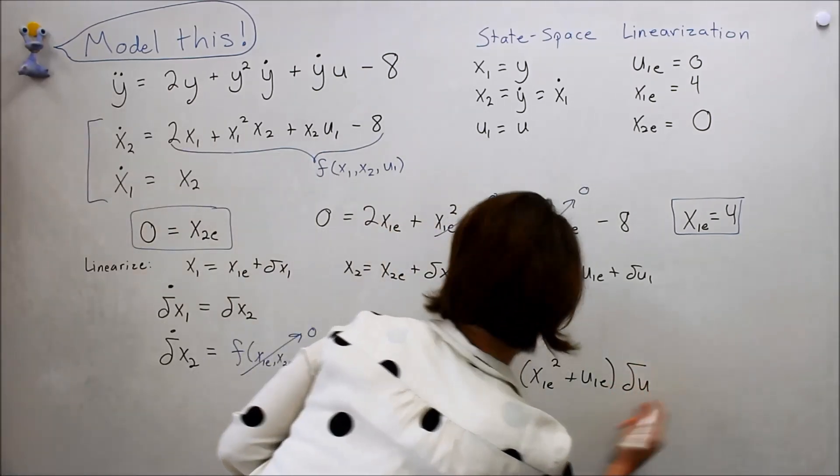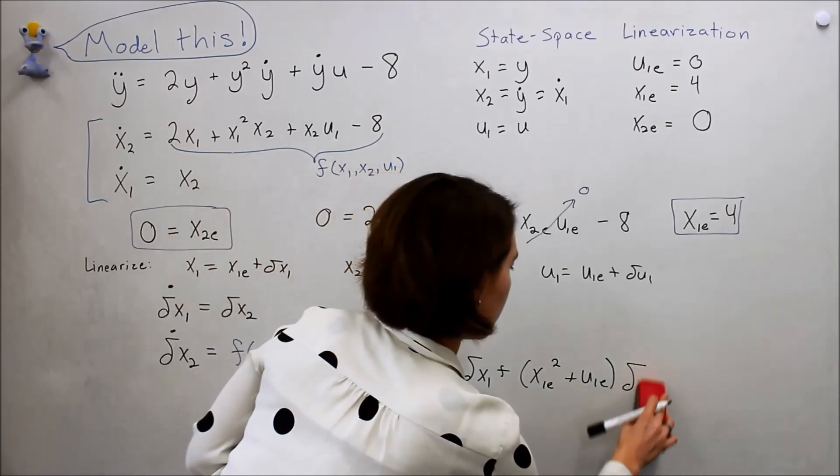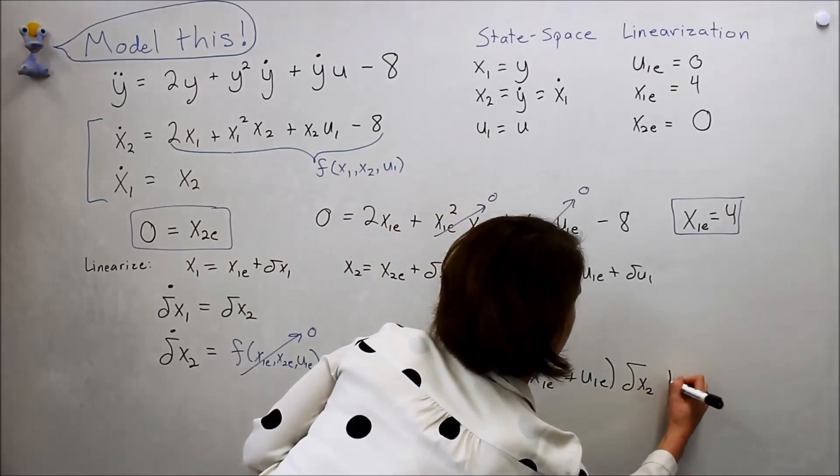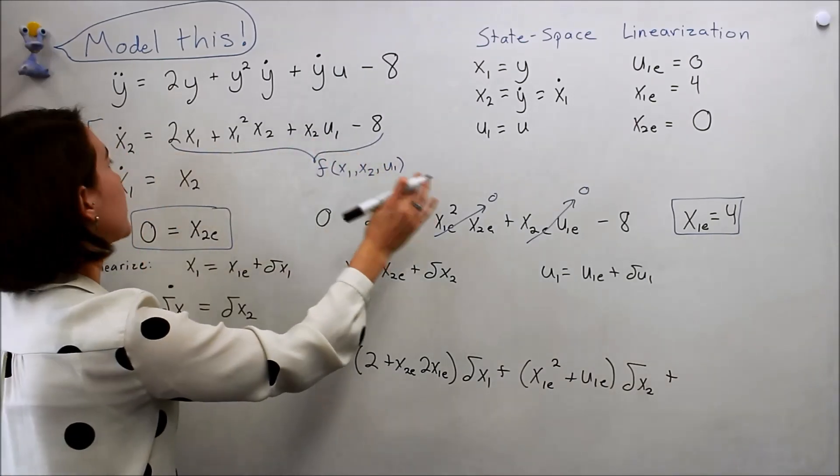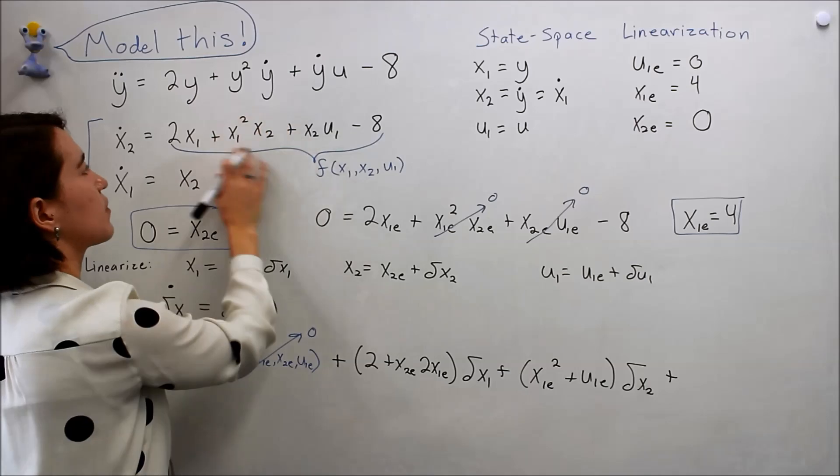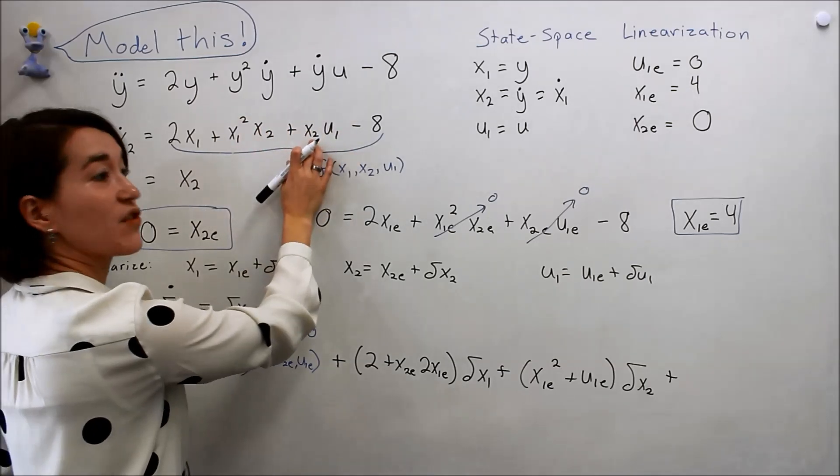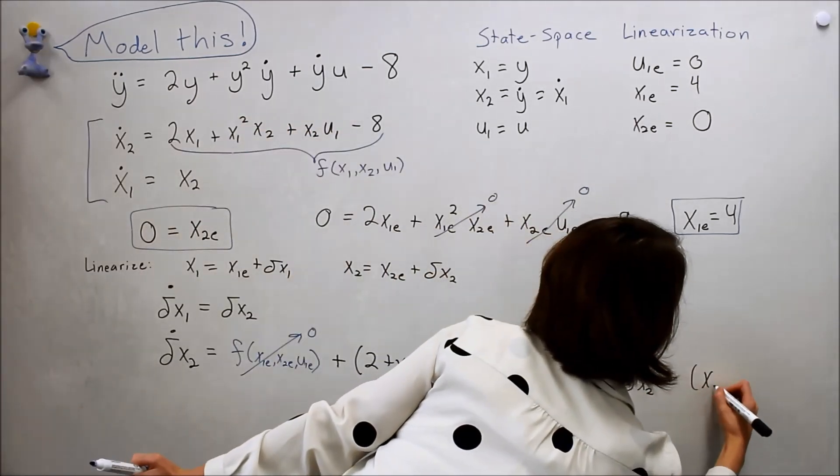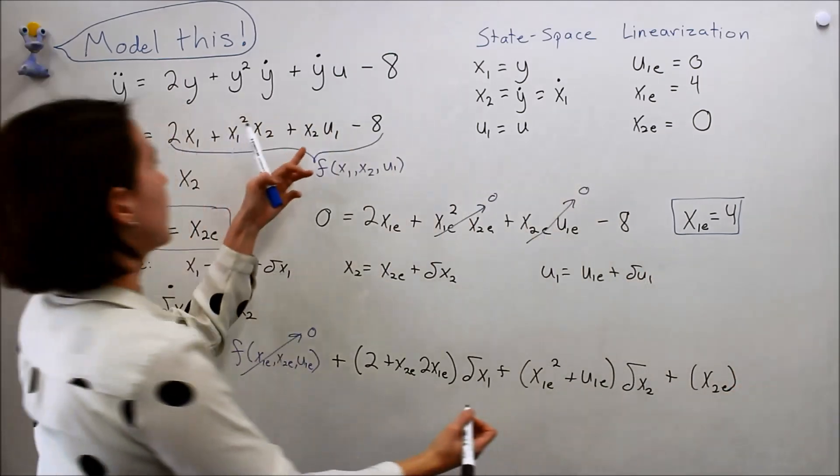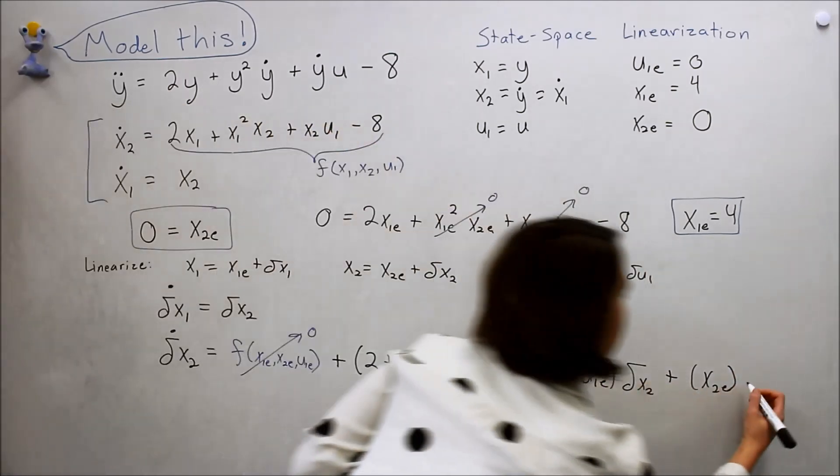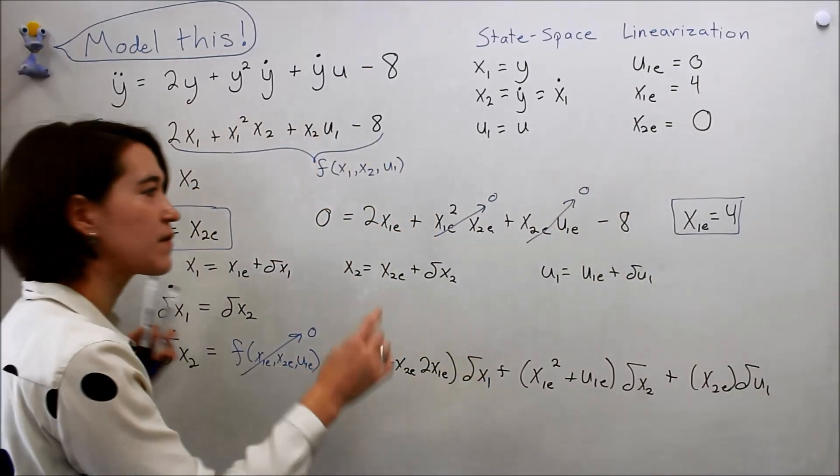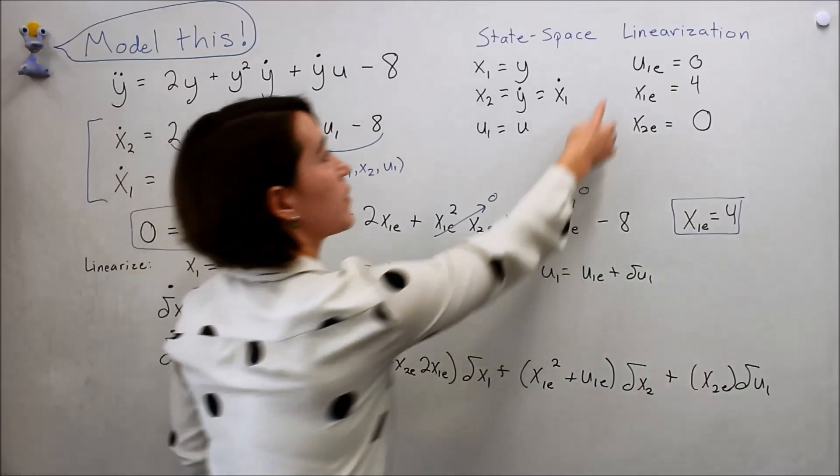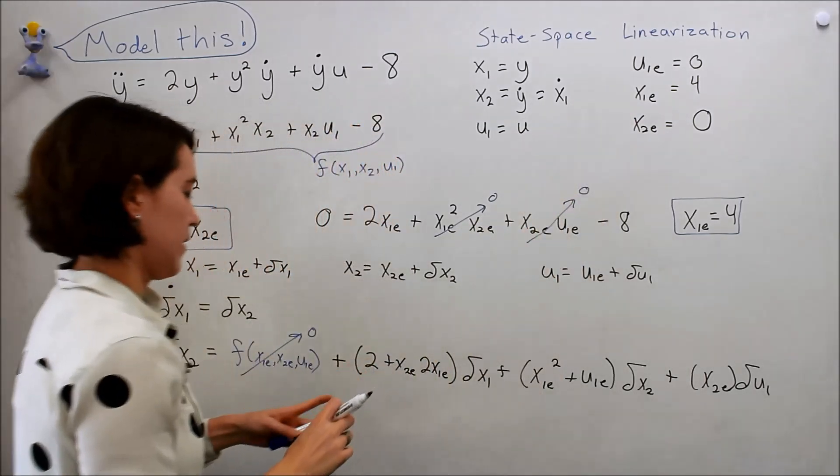And now we just have to do u. So take the partial of this in terms of u1. This would be zero, this would be zero, this would be zero, this one would just be x2e, and that would be zero, times delta u1. So it's a little bit long, but let's fill in these values because we know all these equilibrium points.